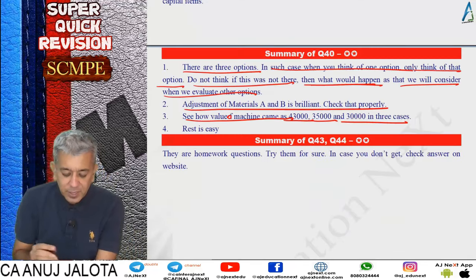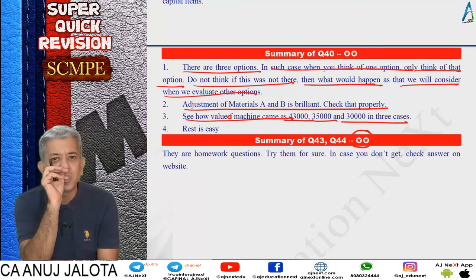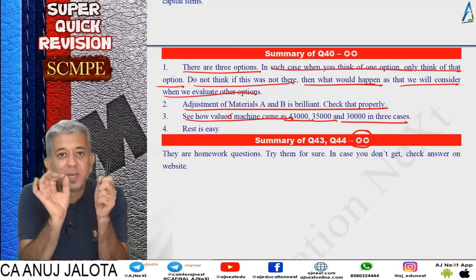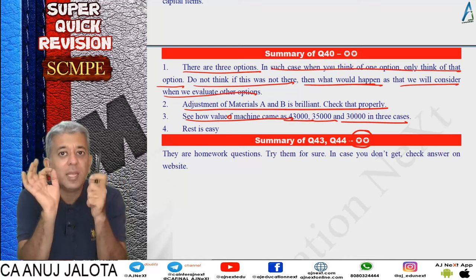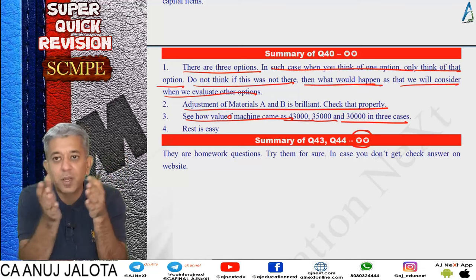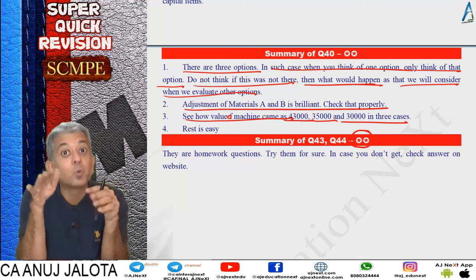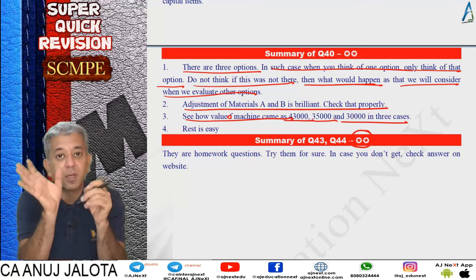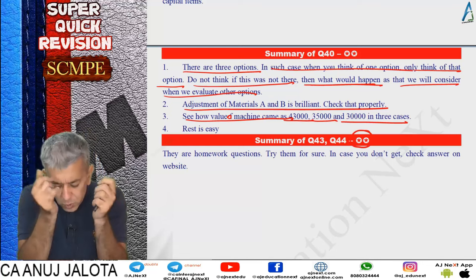Once material A and B adjustments were done, Q40 was complete. The last two questions left for homework are easy, but if easy questions come in the exam with good marks, please describe the logic of each and every item. For example, if it's a regularly used material, state clearly that the relevant cost is current replacement cost and explain why. Always write the logic - it will always be better, especially when a small question carries good marks.